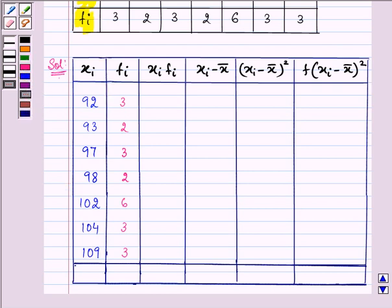Now first of all to find out the mean we need to find out xi*fi. That means we need to multiply xi with fi, that is 92 with 3 giving us 276. Then 93 with 2 giving us 186, 97 with 3 giving us 291. Then we need to multiply 98 with 2 which will give us 196 and so on. We have 612 as the product, 312 as the product of 104 and 3, and 327.